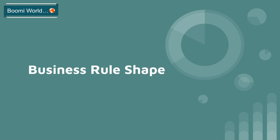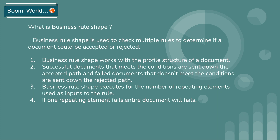So now we can look at what is the Business Rule Shape. The Business Rule Shape is used to check multiple rules to determine if a document could be accepted or rejected. As per our previous video, if you have any condition you can use the Decision Shape — either true or false. But in the Business Rule Shape we can check multiple rules, and it works with the profile structure of a document.